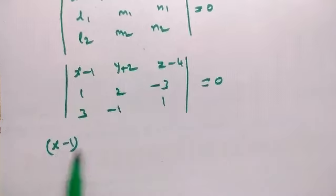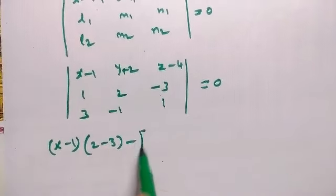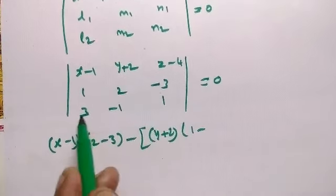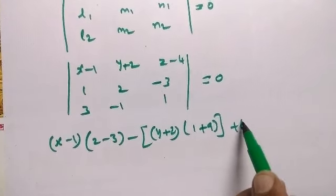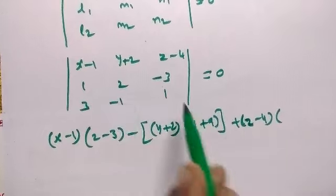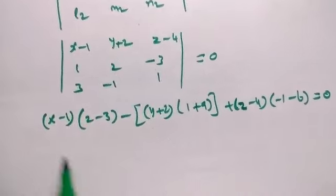So we expand by R1 into 2, -3, minus y + 2, into 1, -3, minus 9 plus 9, equal to plus z - 4 into 1 into -1 minus 1 minus 3, 2s are 6, equal to 0.